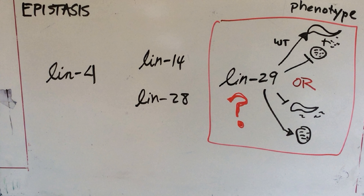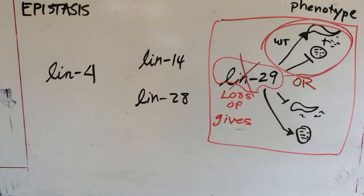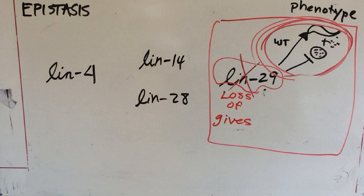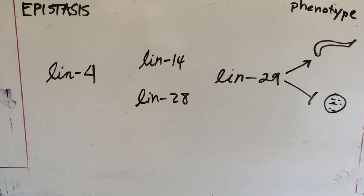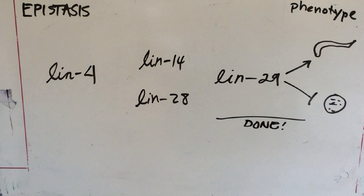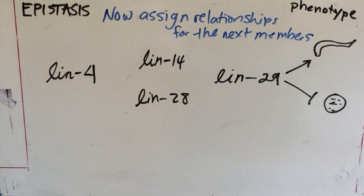We're going to get rid of LIN29 in our minds and ask what the phenotype is. Loss of LIN29 gives only bags of worms. That means the wild type is lost and the bag of worms is not repressed. So LIN29, in its wild type function, promotes the wild type worm and blocks the bag of worms. Its loss gives the opposite. In this pathway analysis, we are going to look at the wild type function of each member in the context of what happens when they're lost.